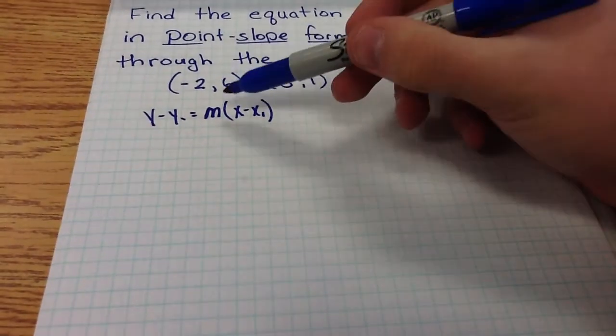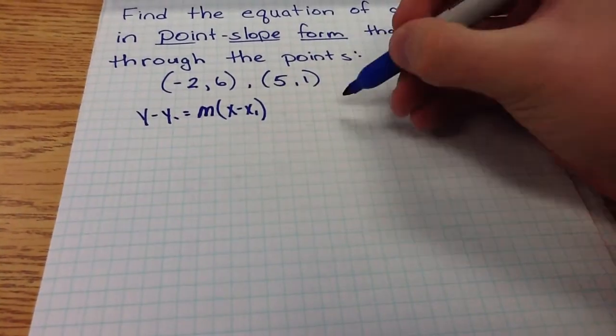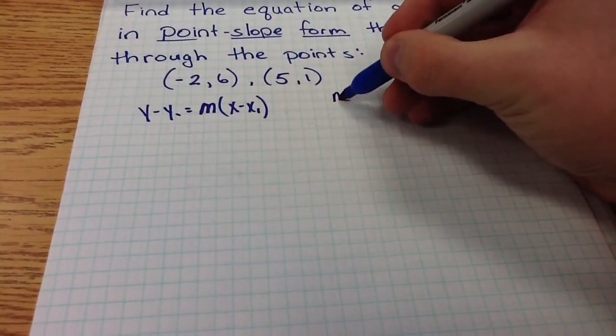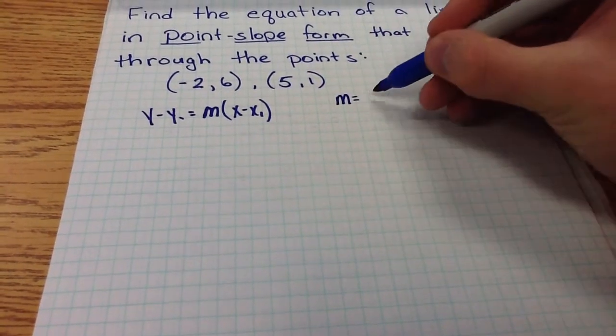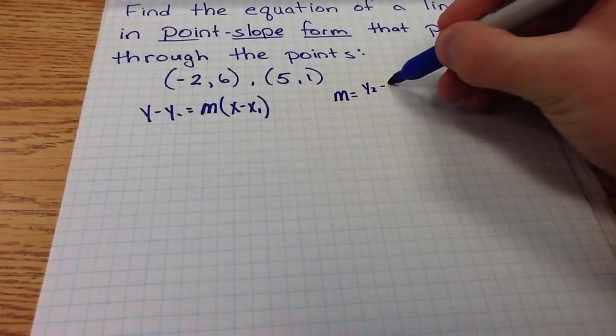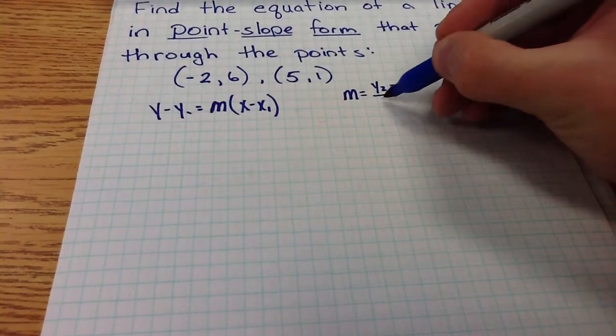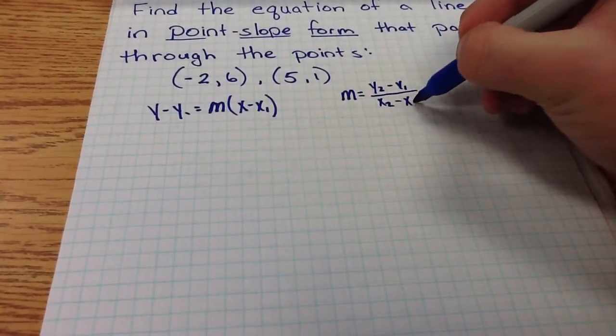So to find the slope, the m value that we're missing, we have to remember that the slope is given by the equation m equals y2 minus y1 divided by x2 minus x1.